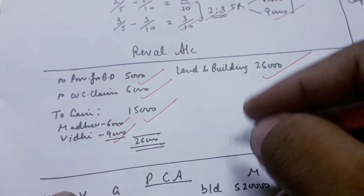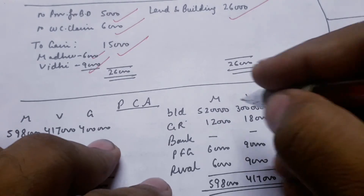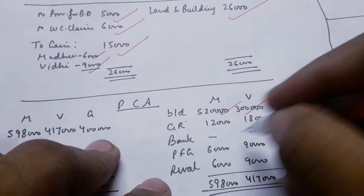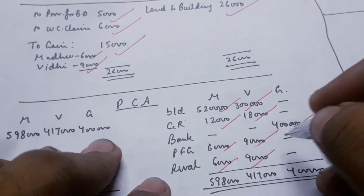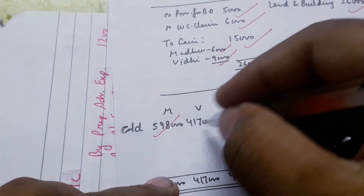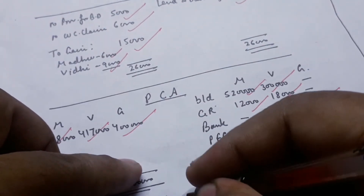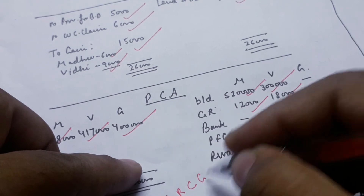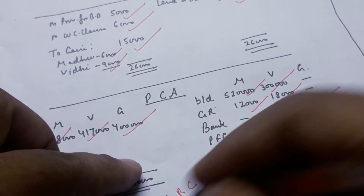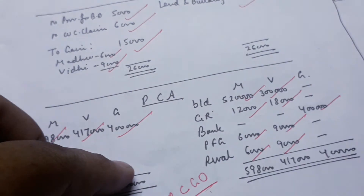The revaluation is complete. Come to the capital round. You see the balance: new capital, PFG, and revaluation profit. Closing balances: 5,98, 4,17, 4. The capital account has balances, equity profit and losses, revaluation profit and loss, capital of new partner, goodwill treatment, and other items. Then closing balances are taken. Take care of 10 CGOs so they are completed in Capital Comments.